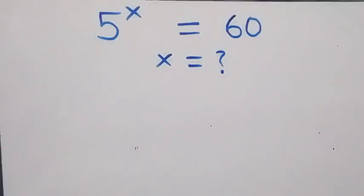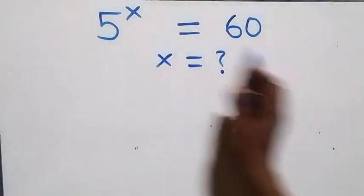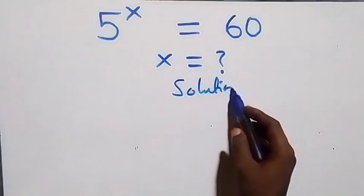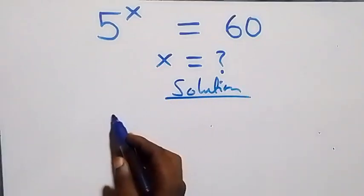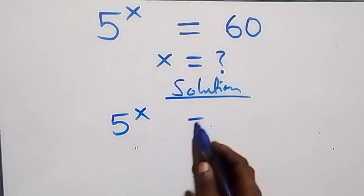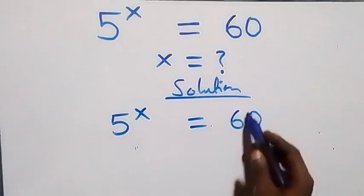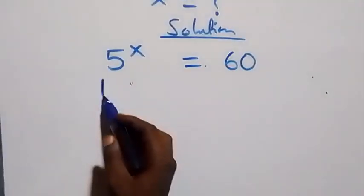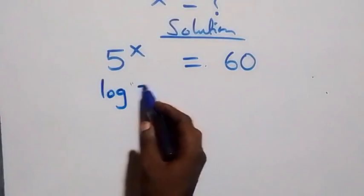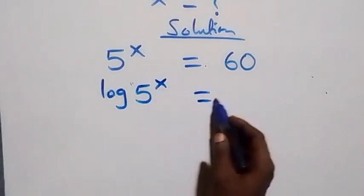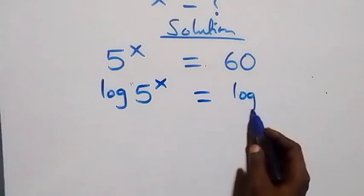Hello, you're welcome. Here we solve this exponential equation: 5 raised to the power x equals 60. We take the log on both sides, giving us log(5^x) equals log(60).